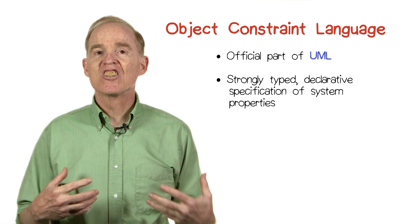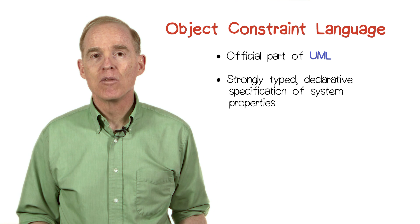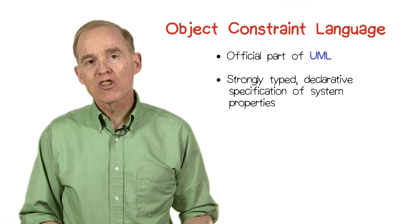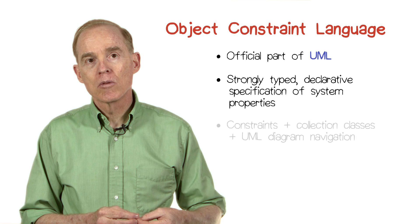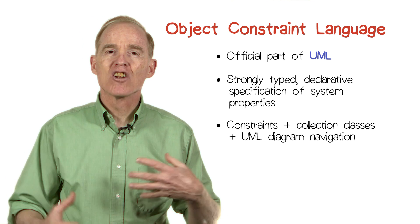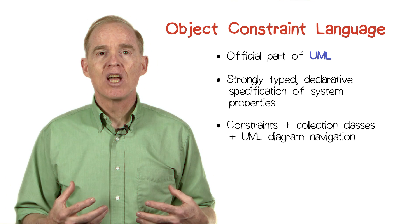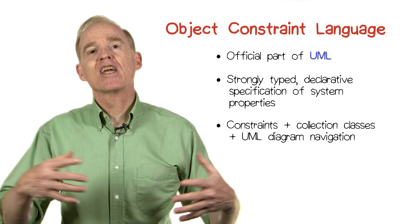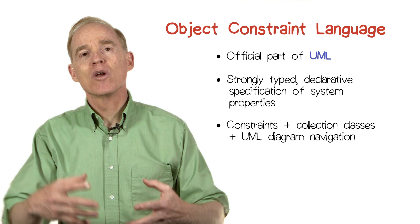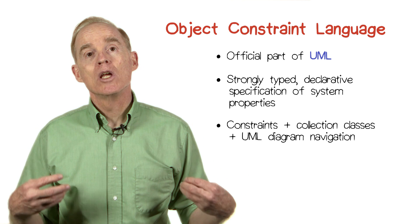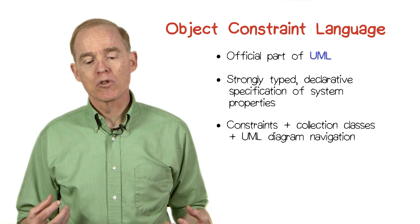OCL consists of a means to express constraints plus some collection classes, and an ability to navigate around the various classes and relationships in your diagrams.